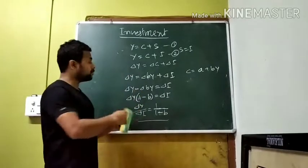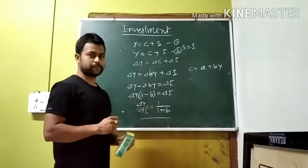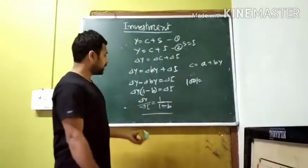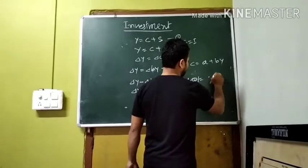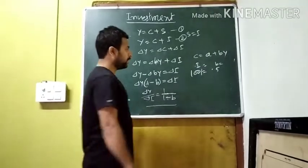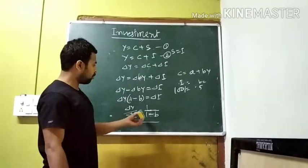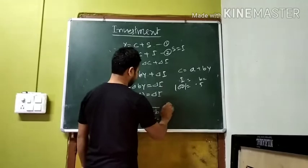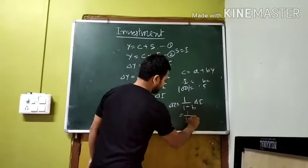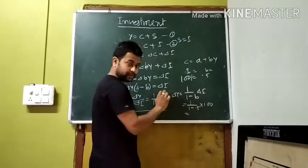I will show you an example. If the initial investment is 100 crores and MPC is 0.5, then Del Y equals 1 by 1 minus B into Del I, which is 1 by 1 minus 0.5 into 100, equals 1 by 0.5 into 100, equals 200 crores.